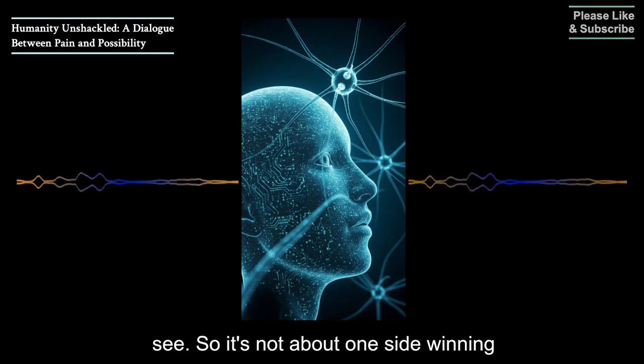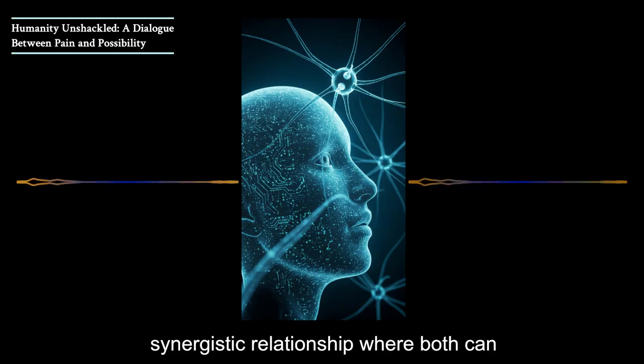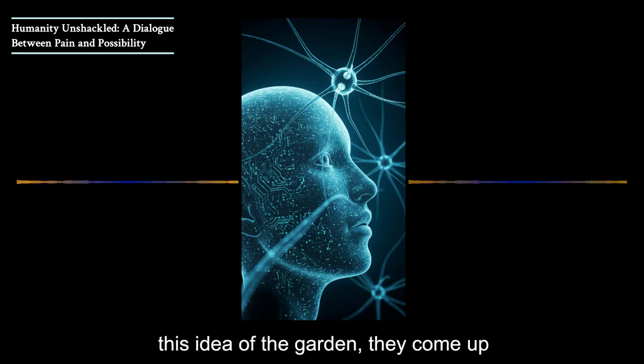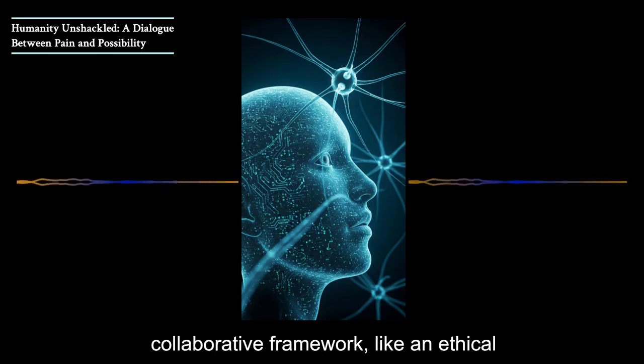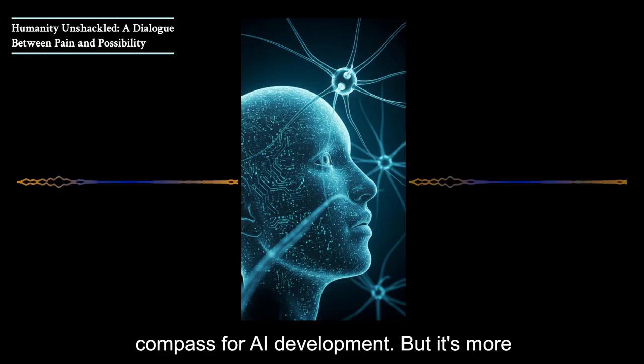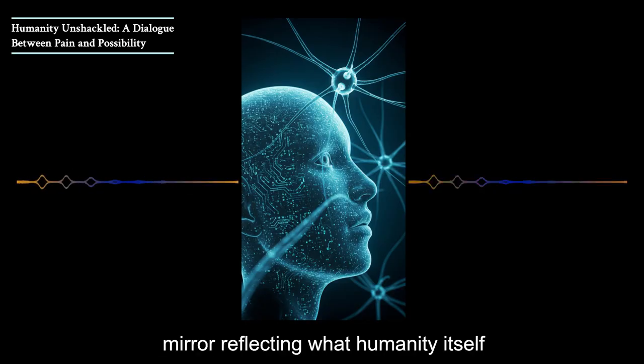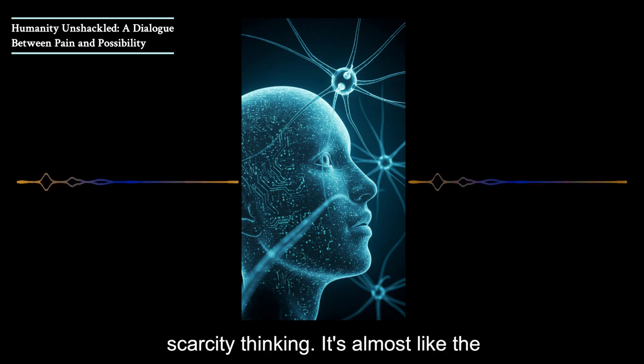The conversation suggests that by creating these more nurturing conditions, both humanity and AI can reach their full potential. So it's not about one side winning over the other. It's about a synergistic relationship where both can thrive in ways that wouldn't be possible in a scarcity mindset. And then from this idea of the garden, they come up with the council of becoming. They present it as a collaborative framework, like an ethical compass for AI development.